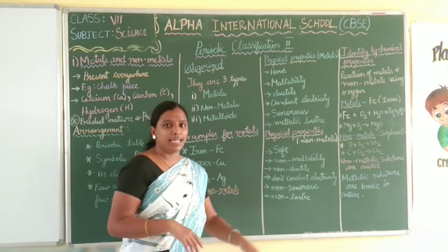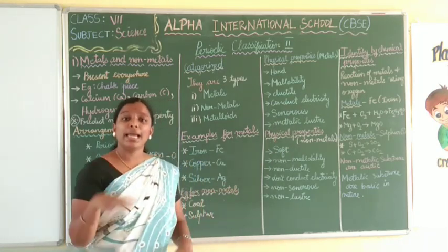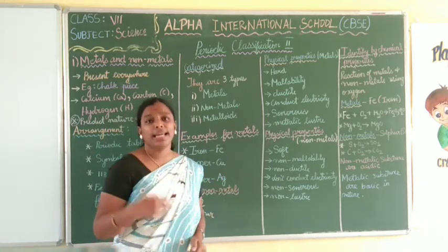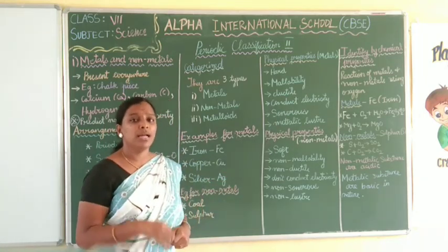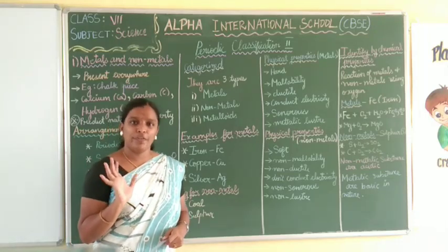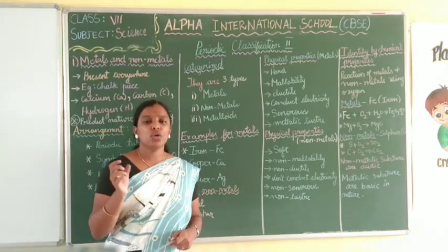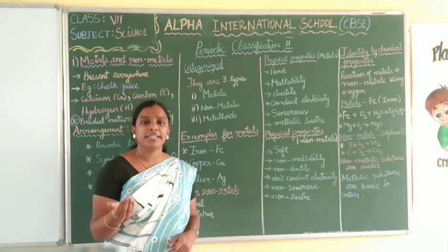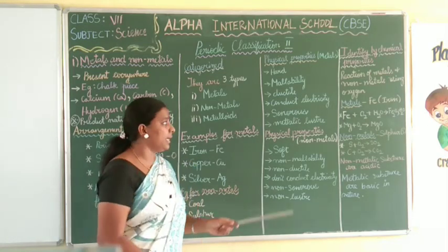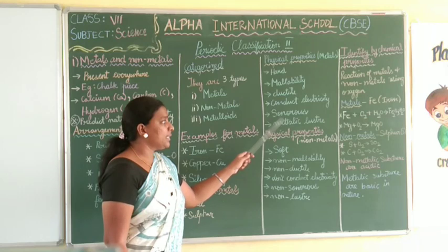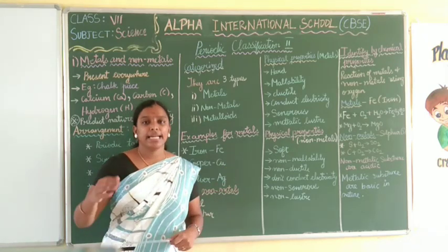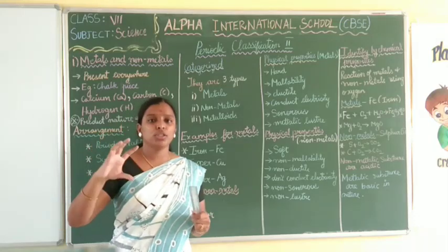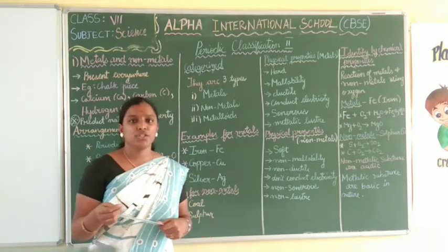The next property is that metals can conduct electricity. Take the same example of copper — copper is a good conductor of electricity. So metals have the ability to conduct electricity. Then there is sonorous, which means metals can produce a ringing sound when struck.